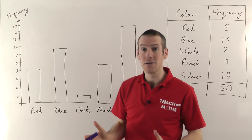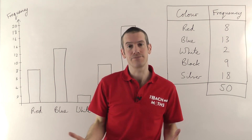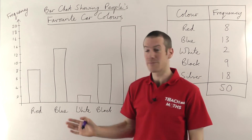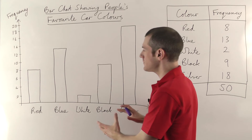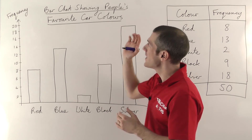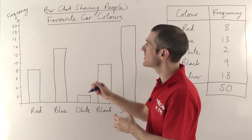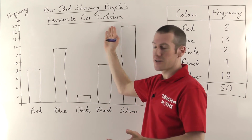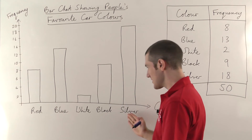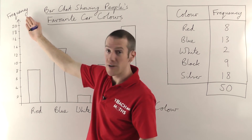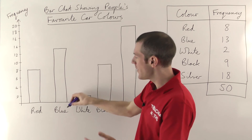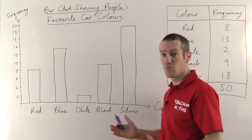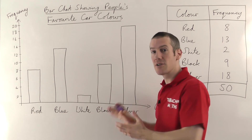The final thing is you need a title for your bar chart, and the title should say what the chart is about. When you first look at this chart, you go, it's a bar chart — and people look at the title. In this case, it's a bar chart about people's favorite car colors, so you know immediately you're dealing with discrete data. You then look at the axes — color along the bottom, frequency up the side. And then you can make sense of it: blue was quite popular with 13 people, the most popular color was silver, and the least popular was white.